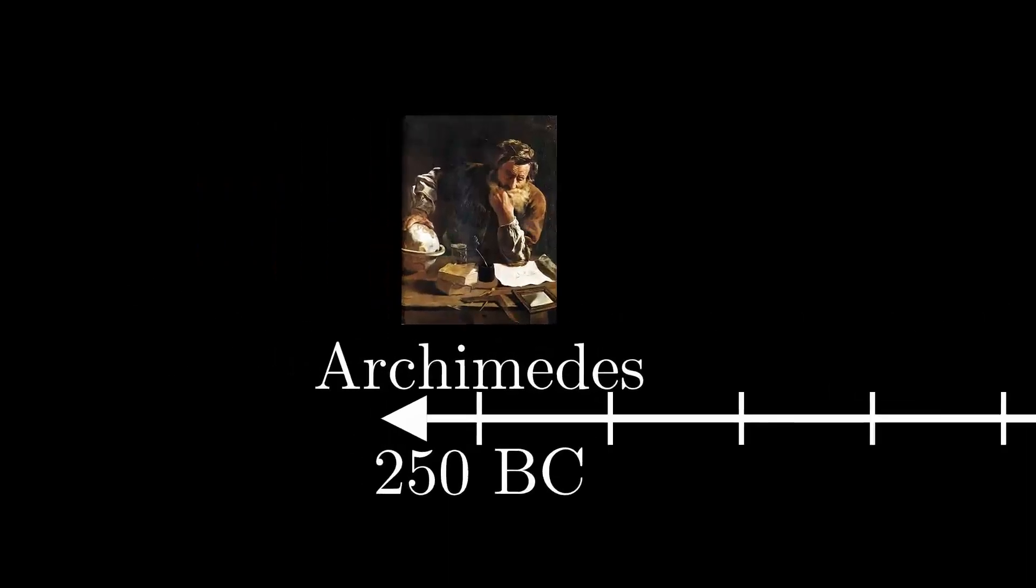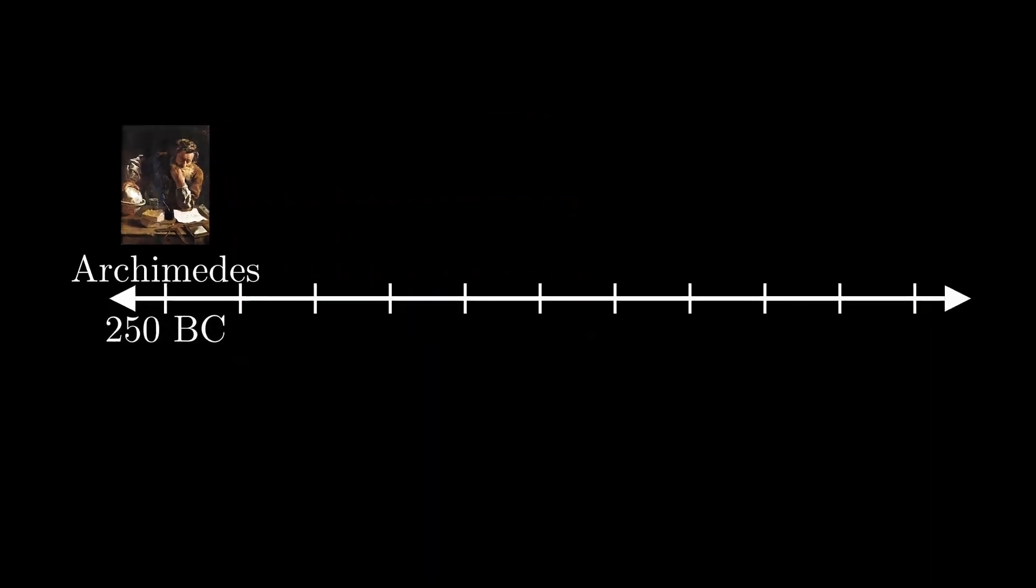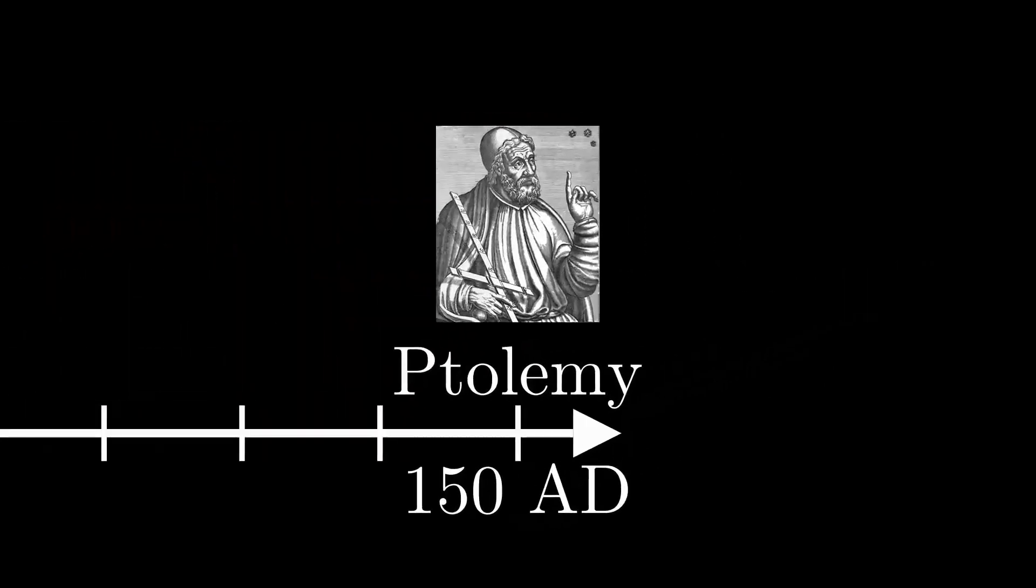This was a mathematical feat that would not be surpassed for another 400 years until Ptolemy, also of Greece, reached an even more accurate calculation. So how did Archimedes do it?